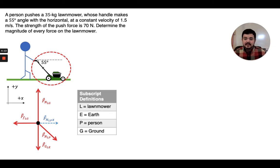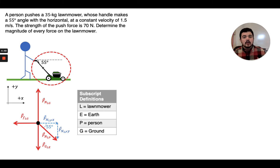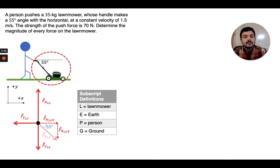We can also draw in the y component. That red normal force by the person is pushing down and to the left, so the y component should represent how much of that force is pointing down. Once those are drawn in, we can indicate that the angle between the x component of the force and the full diagonal force is the same 55 degree angle. We're going to work exclusively with those components — we can ignore the full diagonal force. I'm going to fade out that diagonal arrow and make its components red to emphasize that we'll deal with the pieces rather than the full force.